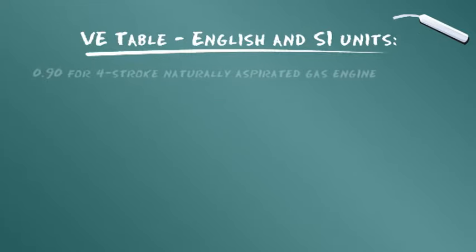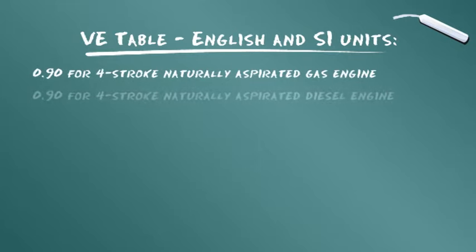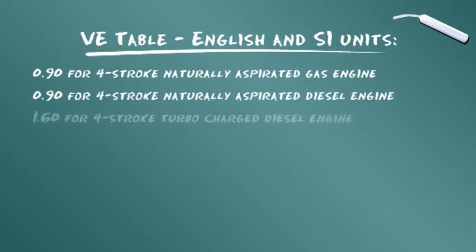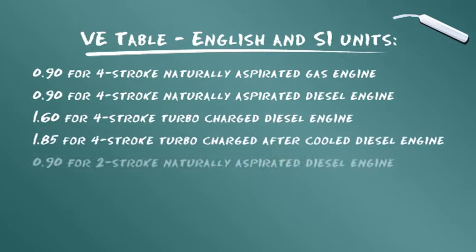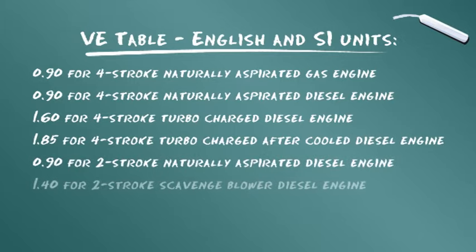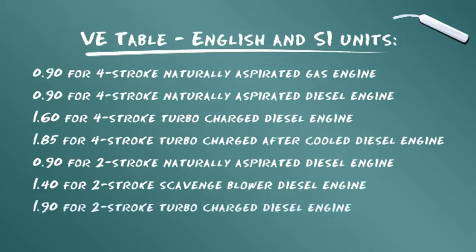Wählen Sie den Wert für den volumetrischen Wirkungsgrad für Ihre Anwendung aus dieser Tabelle aus. Diese Werte können für die englische und die SI-Berechnung verwendet werden. Beachten Sie, dass es sich bei diesen Werten um Richtlinien handelt. Durch die elektronische Steuerung moderner Motoren kann der VE-Wert auf 2,0 oder höher steigen.